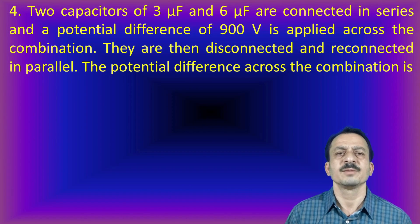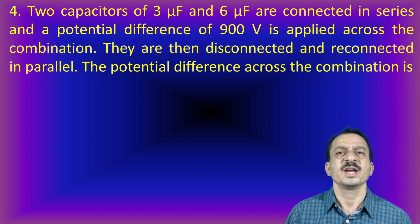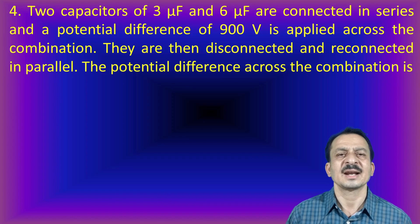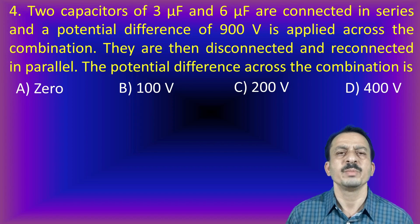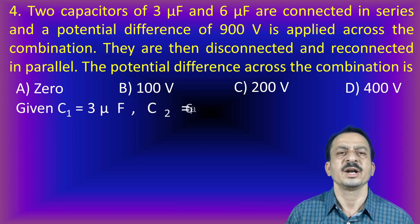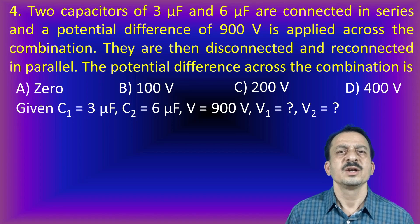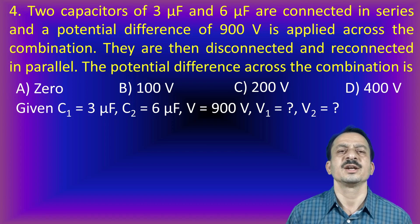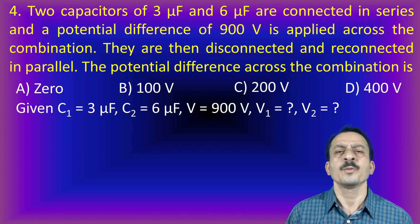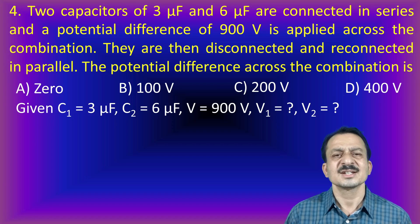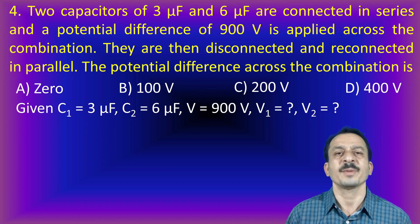Next problem: two capacitors of 3 microfarad and 6 microfarad are connected in series and a potential difference of 900 volt is applied. They are then disconnected and reconnected in parallel. The potential difference across the combination is — options: A, zero; B, 100 volt; C, 200 volt; D, 400 volt. In series, the charges are the same, so potentials divide in inverse ratio of capacitance.